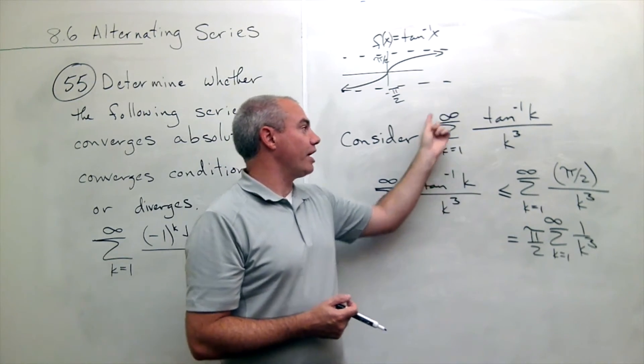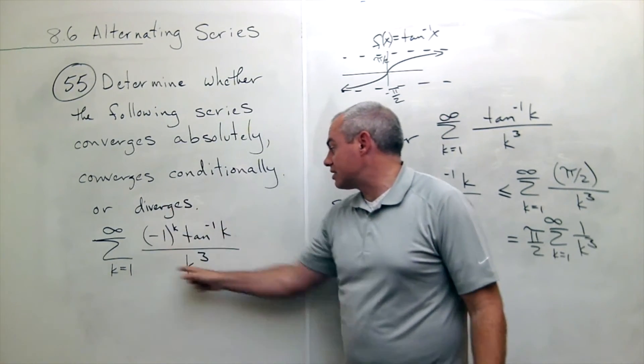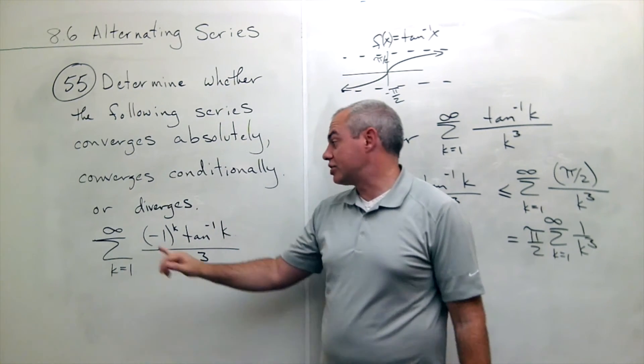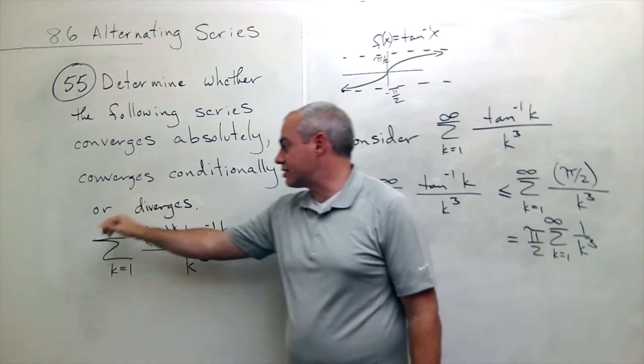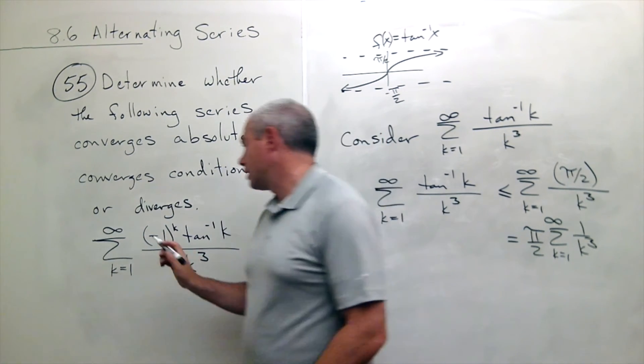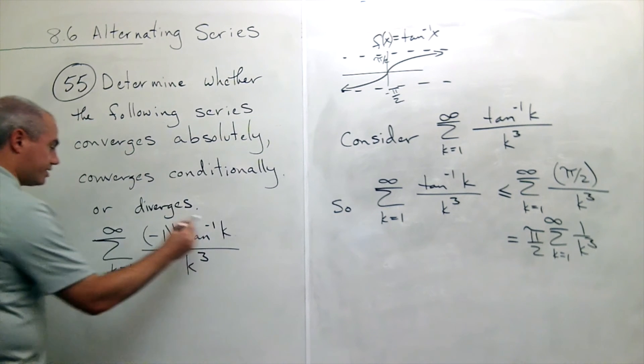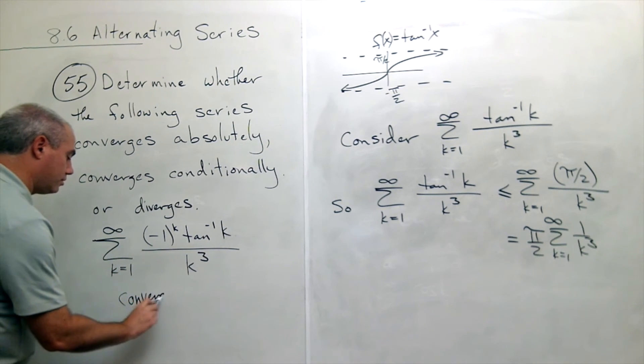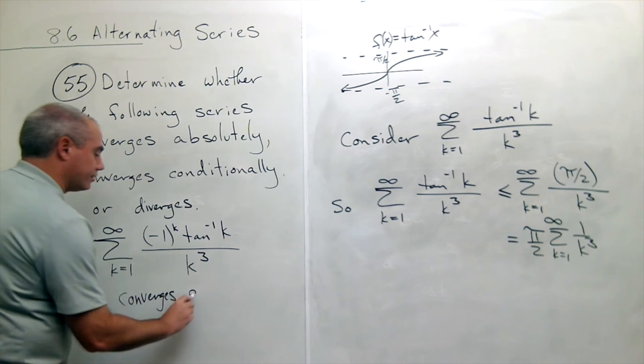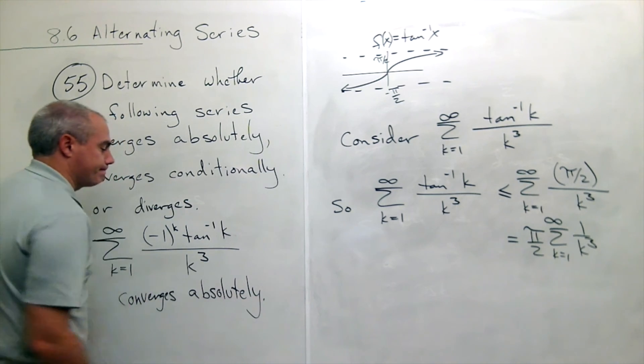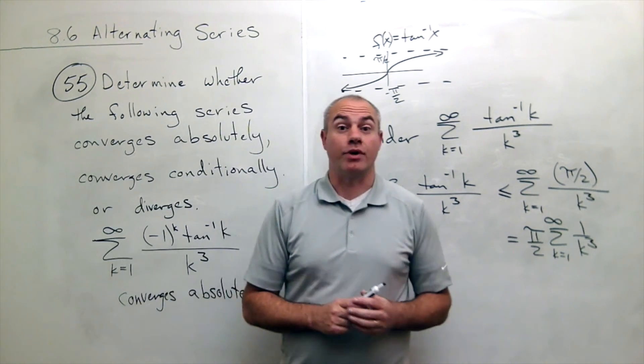And so, I figured out that if I made all of these positive values, it converges, which tells me that this series converges absolutely. Okay? So, my conclusion here is this guy converges absolutely. And we are done.